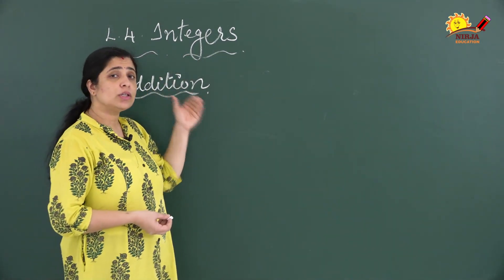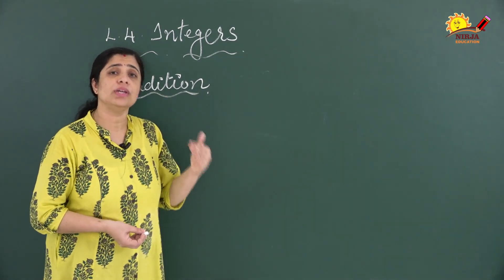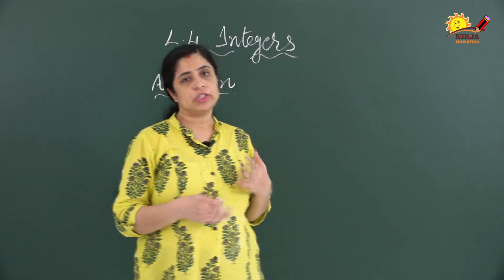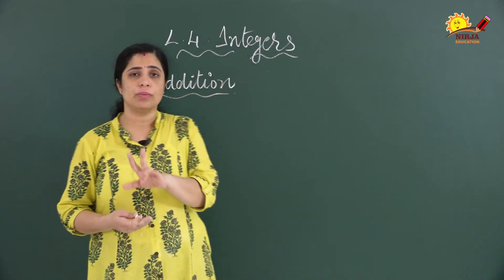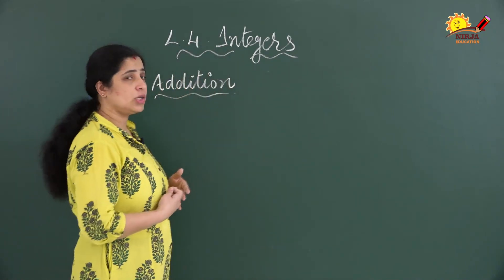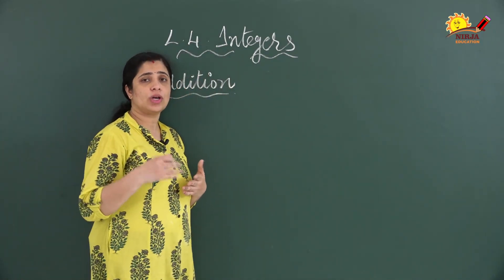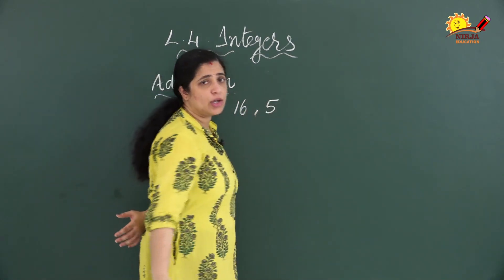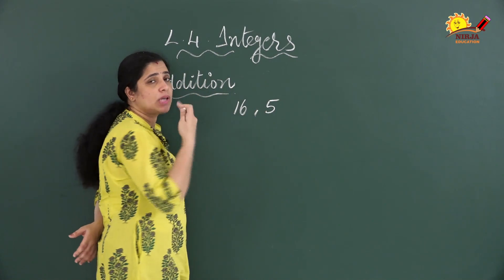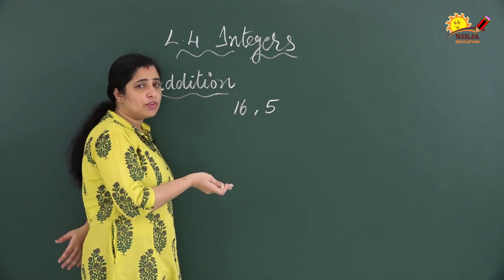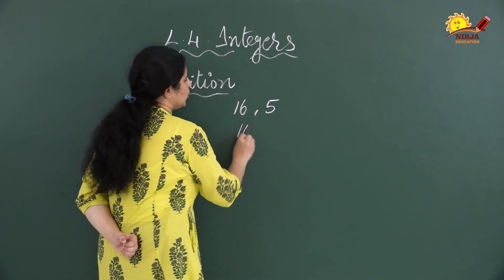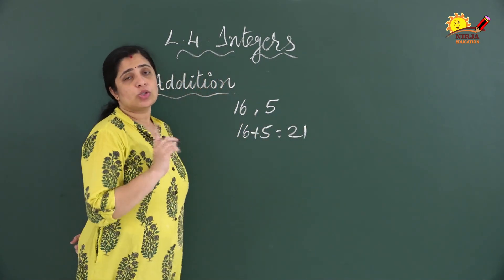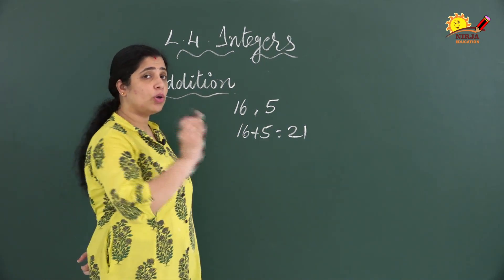We will discuss the different possibilities and the rules we should follow for the addition of integers. The first condition is that both numbers are positive. That is easy — from smaller standards onwards you have been learning this. For example, 16 plus 5: you know both numbers are positive, so you can add directly. 16 plus 5 is equal to 21.